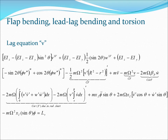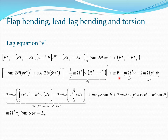Looking at the lag equation — this equation is very long and cumbersome, but some terms we have seen before in simpler forms. The basic term in lag is EI_z·V'''' plus m·V̈, which would be there for a simple beam. Because of the presence of theta, all the coupling terms come in. Terms involving one rotation speed are Coriolis terms, and omega-squared terms are centrifugal force terms. On the right-hand side is the aerodynamic force L_V acting in the lag direction, which primarily comes from drag — both induced drag and profile drag.